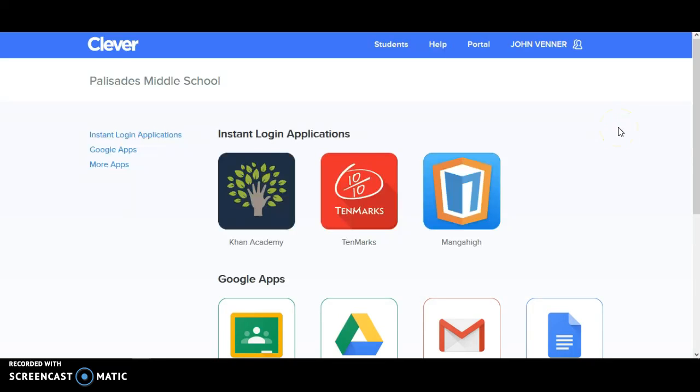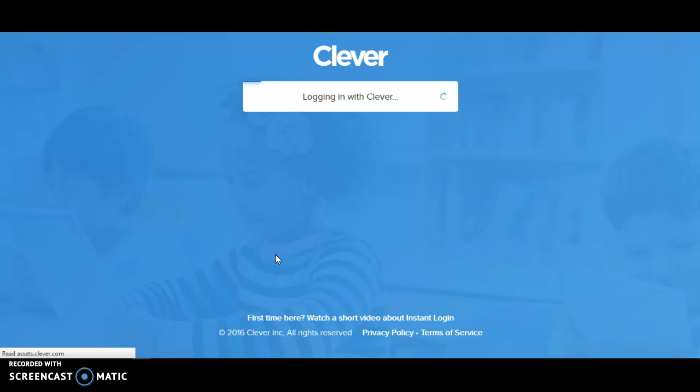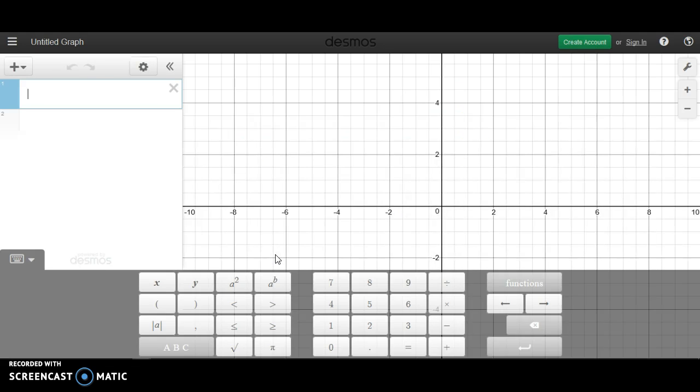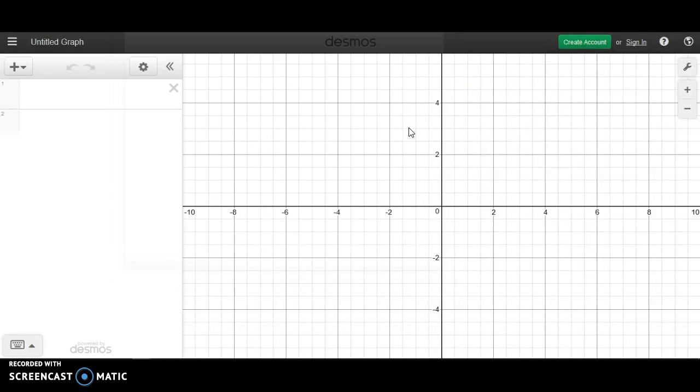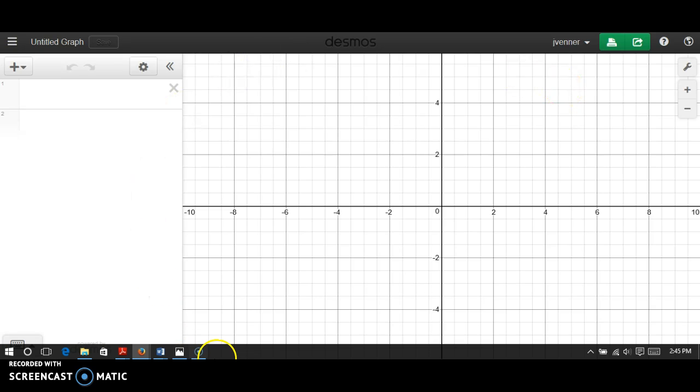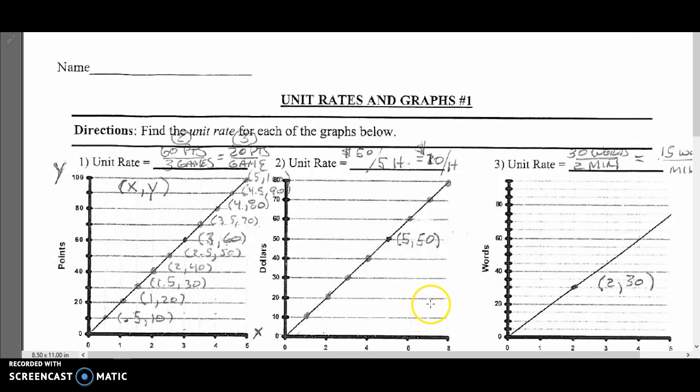Okay, what I've asked you to do tonight is go on to Clever, open up your Clever portal, and go into the Desmos graphing calculator. Sign in with your Google account and your name should appear here. We are going to recreate this graph from class today.